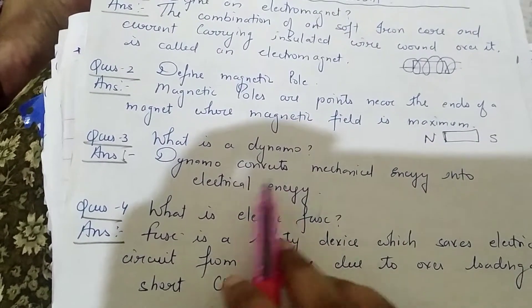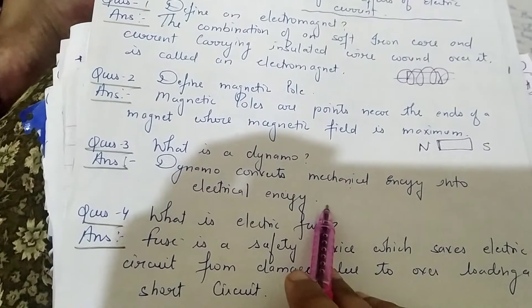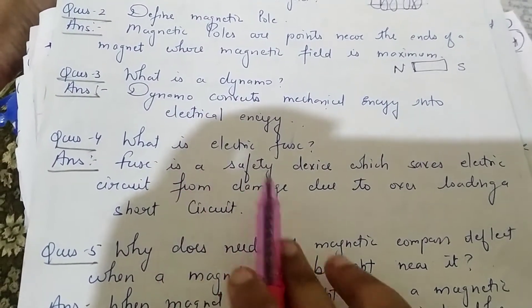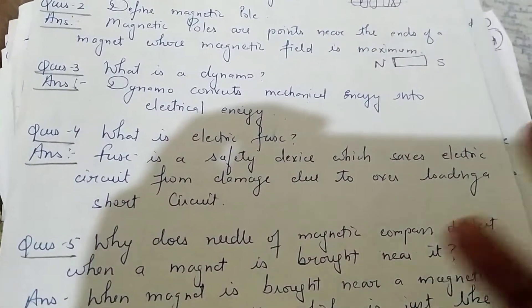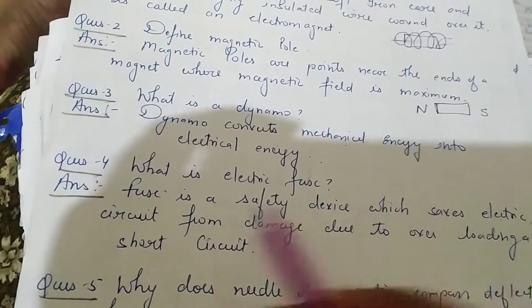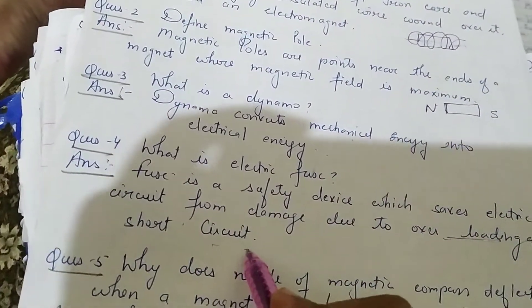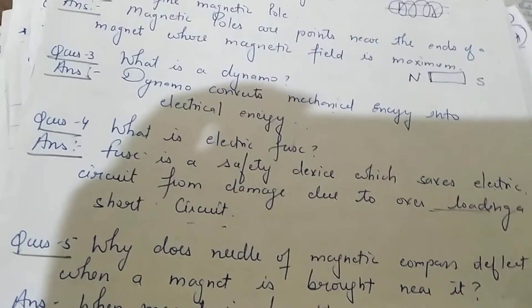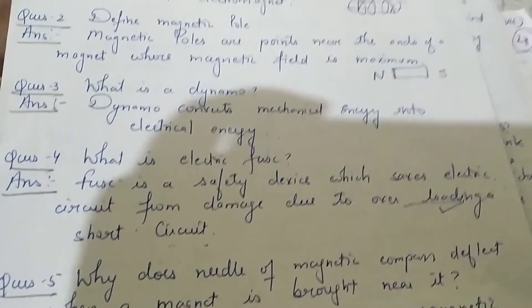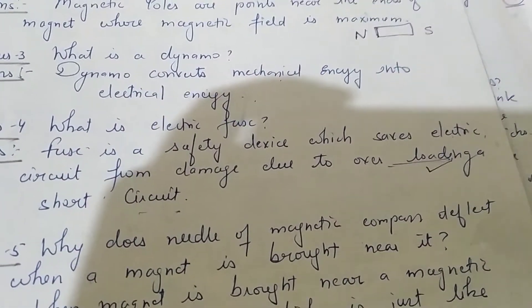What is dynamo? Dynamo converts mechanical energy to electrical energy. What is electrical fuse? Fuse is a safety device which saves electric circuits from overloading. When excess current flows through the circuit, the fuse wire melts and breaks the circuit.